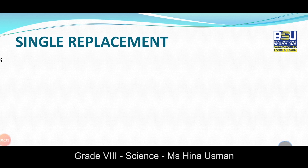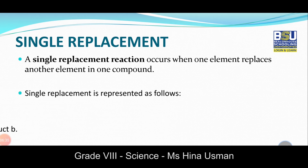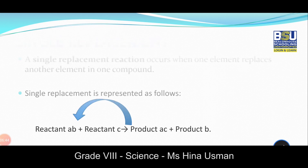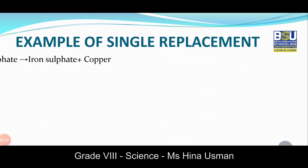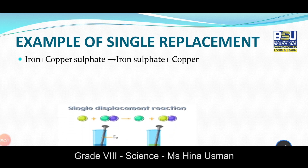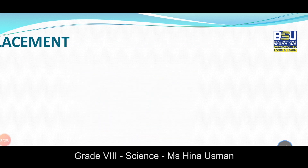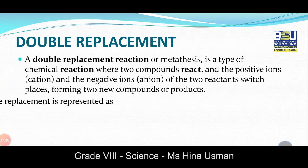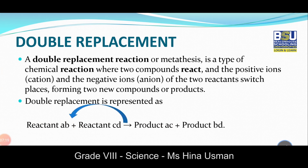The last type is double replacement reactions, in which two compounds react and the positive ions and negative ions of the two reactants switch places. An example is the neutralization reaction, in which an acid reacts with an alkali to produce water and salt.